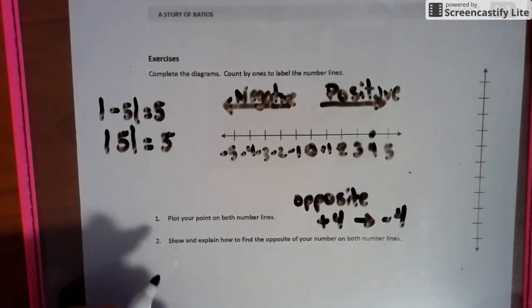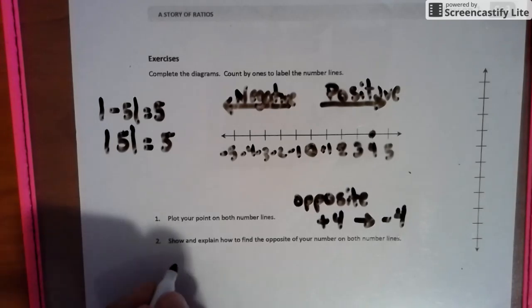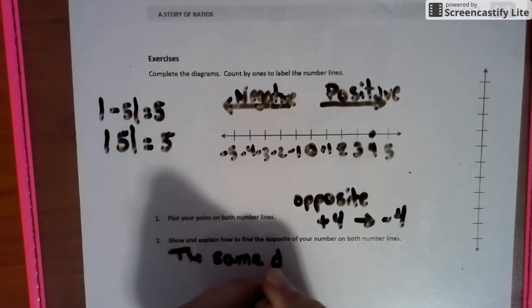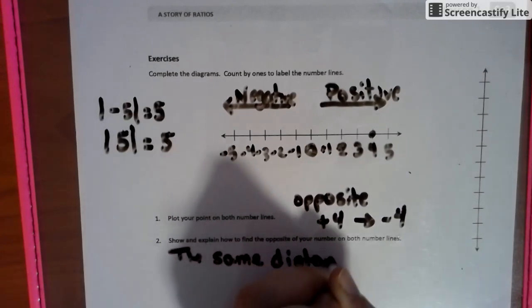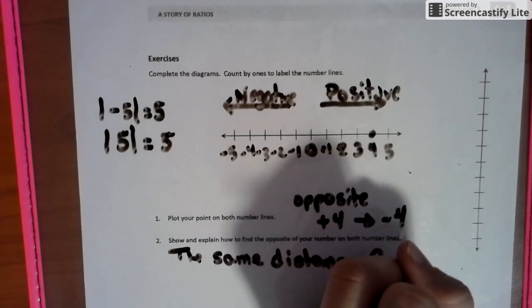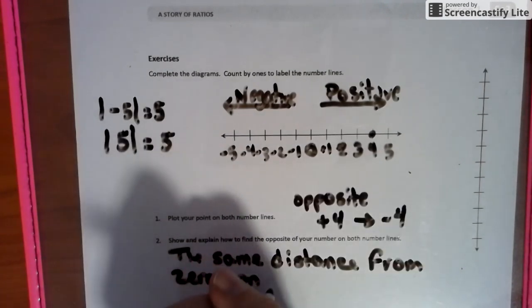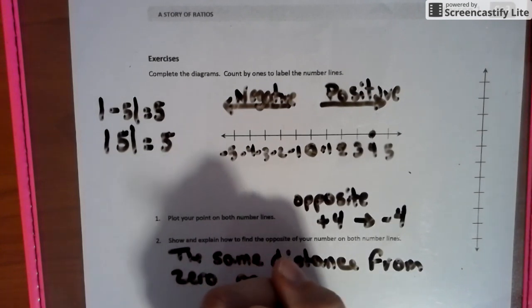So explaining how we found the opposite of the number on the number line, we can bring in that absolute value talk that we were saying before. So we're going to plot four the same distance from zero on the number line.